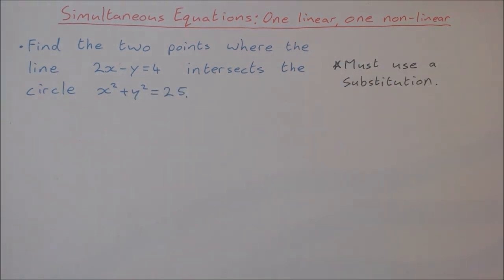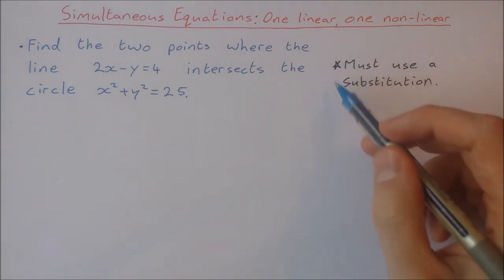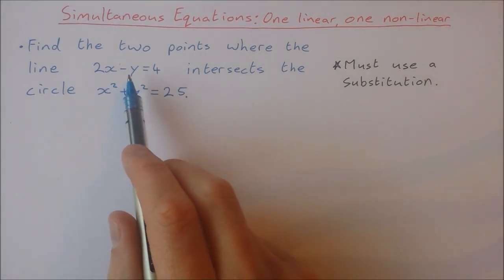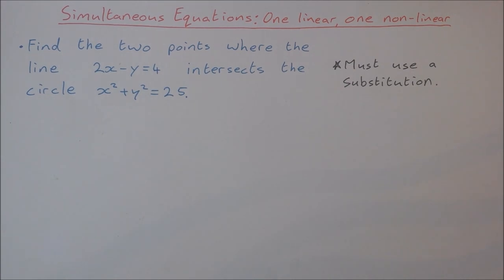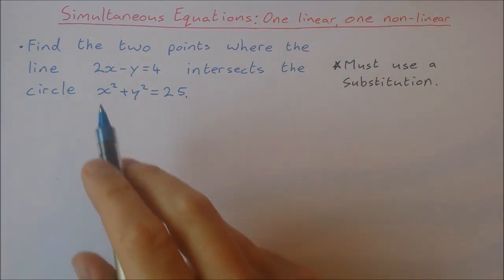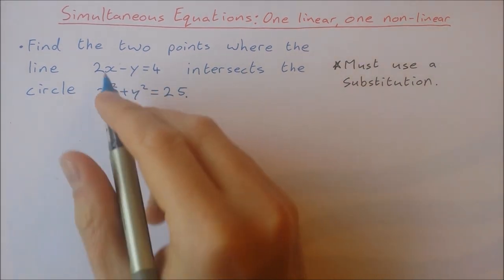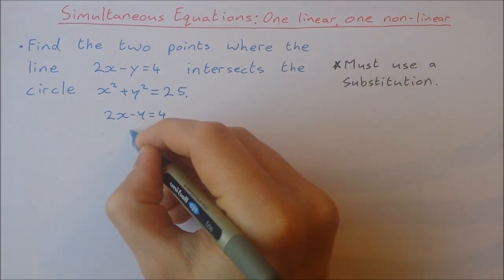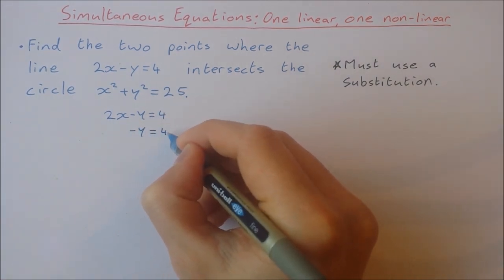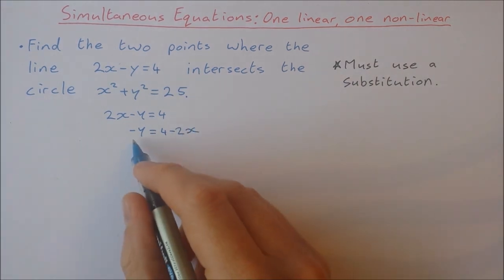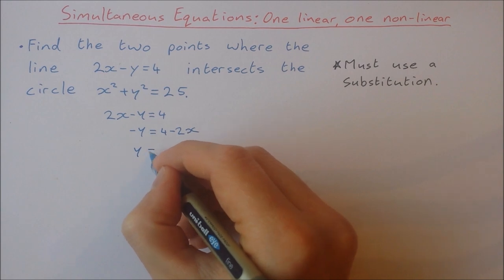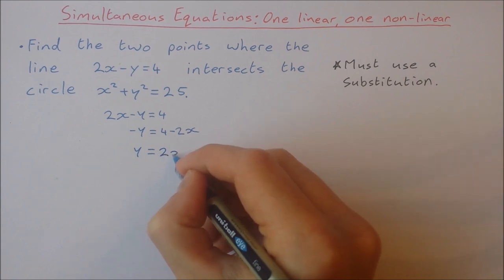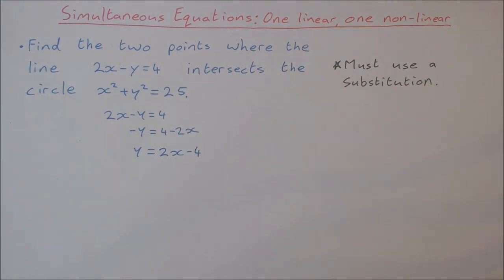To solve these equations we must use a substitution. I'm going to isolate y in this equation here. 2x minus y equals 4. I'm going to take 2x from both sides so I'll get minus y equals 4 minus 2x. Now I'm going to multiply everything by minus 1, so y is going to be equal to minus 4 plus 2x. I'll just write it in the other way to get y equals 2x minus 4.